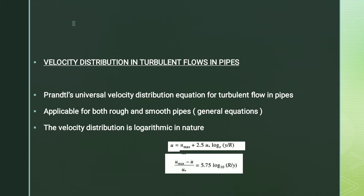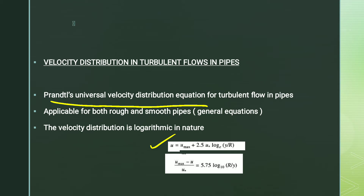Now, the three things we have to do with shear stress distribution. In the case of turbulent flow, we have to derive the velocity distribution equation. This is Prandtl's universal velocity distribution equation for turbulent flow in pipes, applicable for rough and smooth pipes. The equation is: u = u_max + 2.5 u* log_e (y/r). Here, u* is called shear velocity, which is actually a hypothetical velocity.